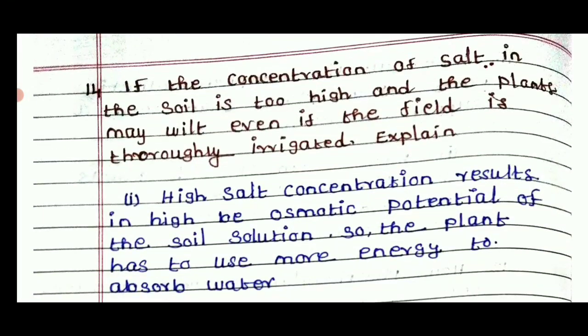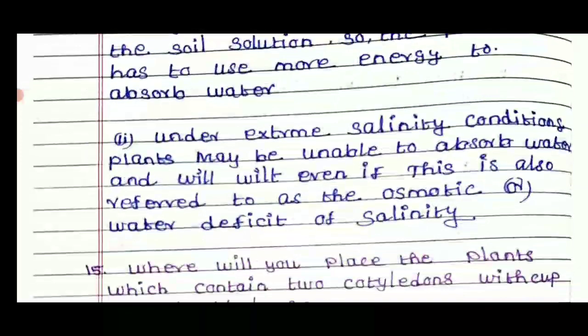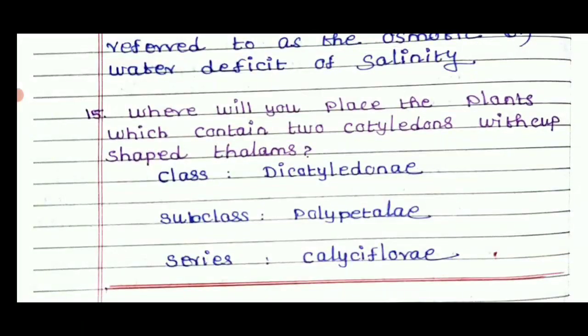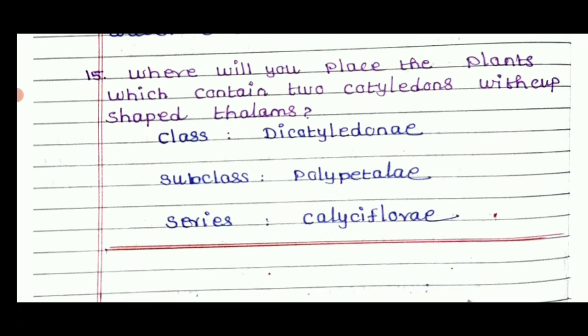If the concentration of salt in the soil is too high, the plants may be wilted even in fully irrigated roots — it will be explained. Where will you place the plants which contain two cotyledons with cup-shaped thalamus? The answer: class — Dicot, subclass — Polypetalae, series — Calyciflorae.